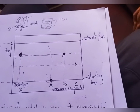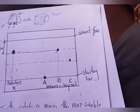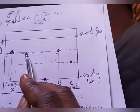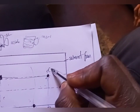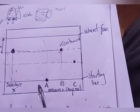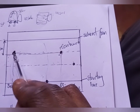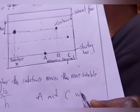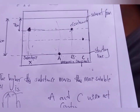The other question asks which substances were not contained in substance X. You check substance X — looking at its spot, it contains component B. So B was contained in substance X. But checking A and C, they are not in the same line as the spot for X, meaning A and C were not contained in substance X.